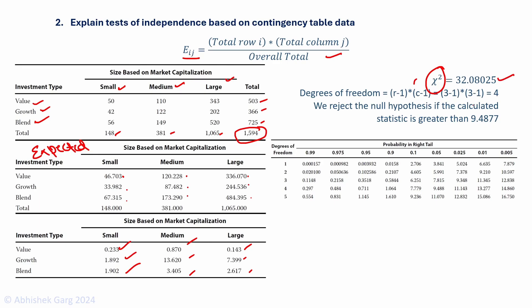The total chi-squared test stat is the sum of these individual parameters, which comes to 32.08025. The degrees of freedom are 4. We will reject the null hypothesis if the calculated test stat is greater than 9.4877, which is the critical value for degrees of freedom 4. Since our test stat is greater than the critical value of 9.4877, we reject the null hypothesis.